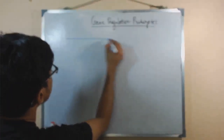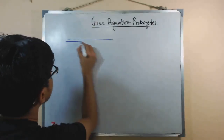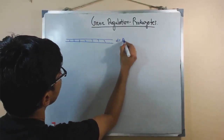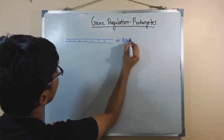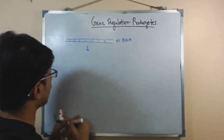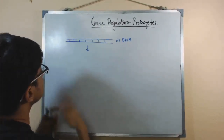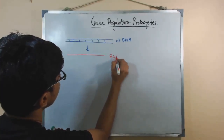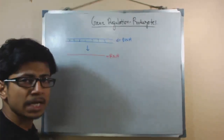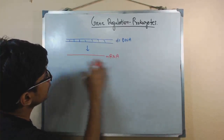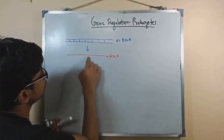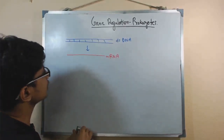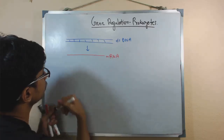Let us say we have a large double-stranded DNA, and from this DNA we have produced an mRNA. This mRNA contains all the different genes in different regions, and this mRNA will be translated into protein products.